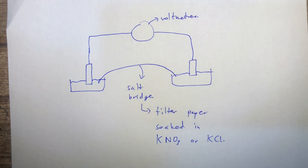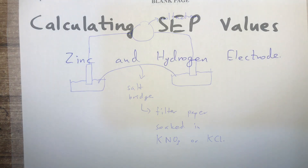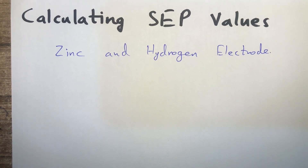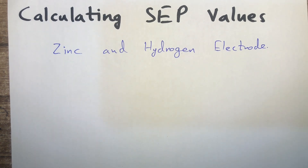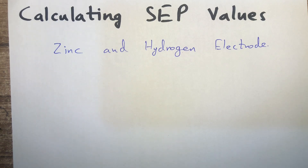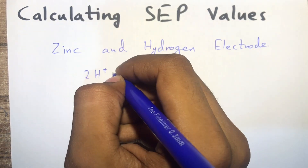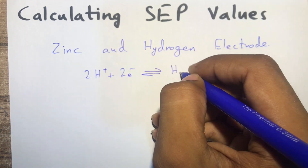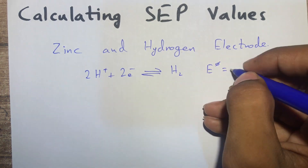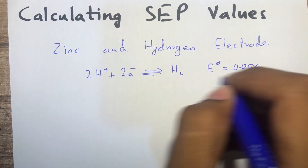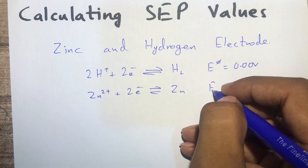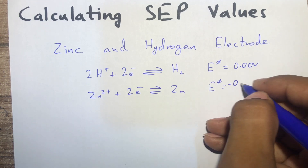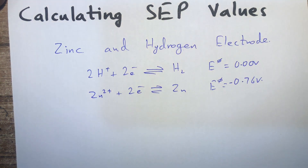Now we'll calculate the SCP value of zinc using a zinc and hydrogen electrode. Hydrogen's SCP value is 0.00 V. The equation for hydrogen is: 2H⁺ + 2e⁻ → H₂, E° = 0.00 V. For zinc: Zn²⁺ + 2e⁻ → Zn, E° = −0.76 V. The SCP values do not need to be memorized - in the previous syllabus they were in the data booklet, and in the new syllabus they will be given with the question.